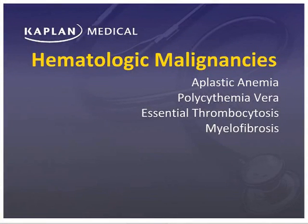Let's start looking at hematologic malignancies. Aplastic anemia is not exactly a malignancy, but it fits in with this group because you've got to analyze pancytopenia. Polycythemia vera, essential thrombocytosis, and myelofibrosis are also all leukemic-type syndromes.